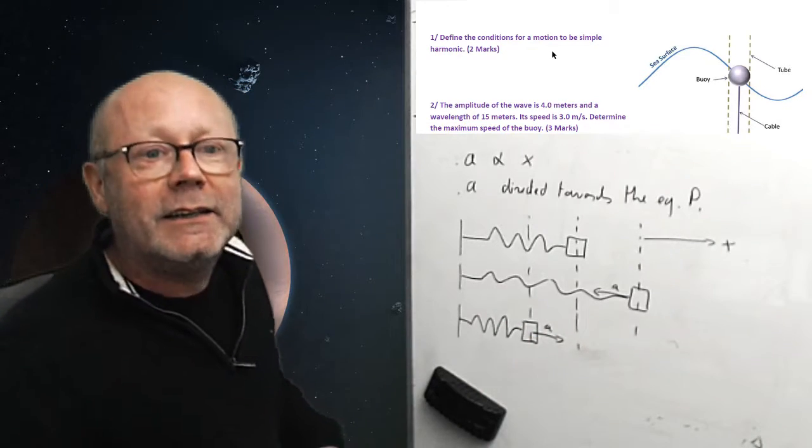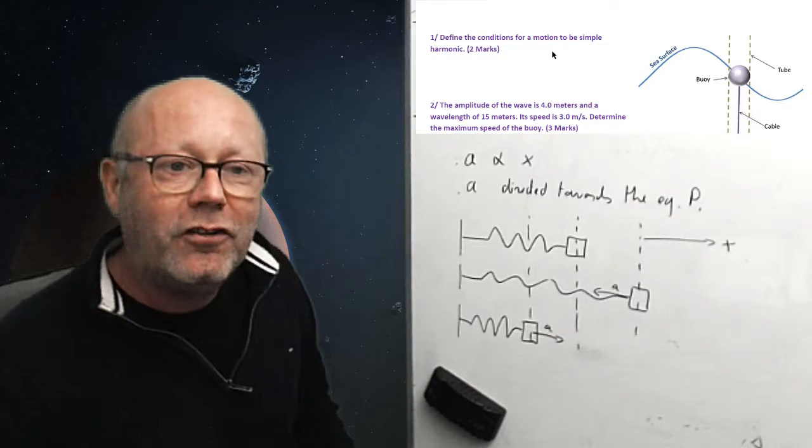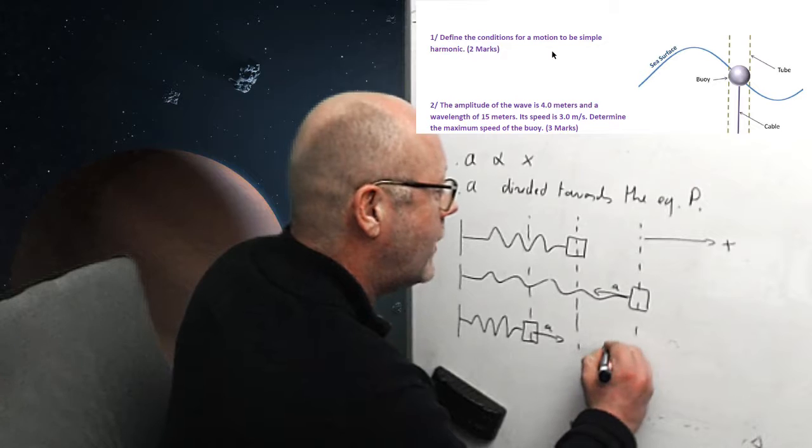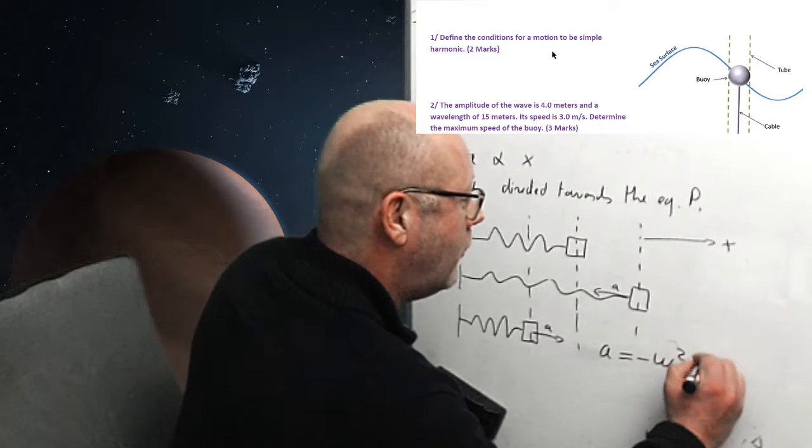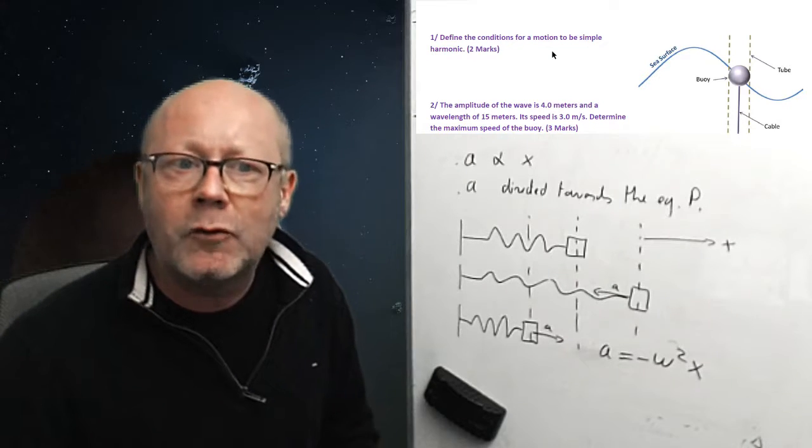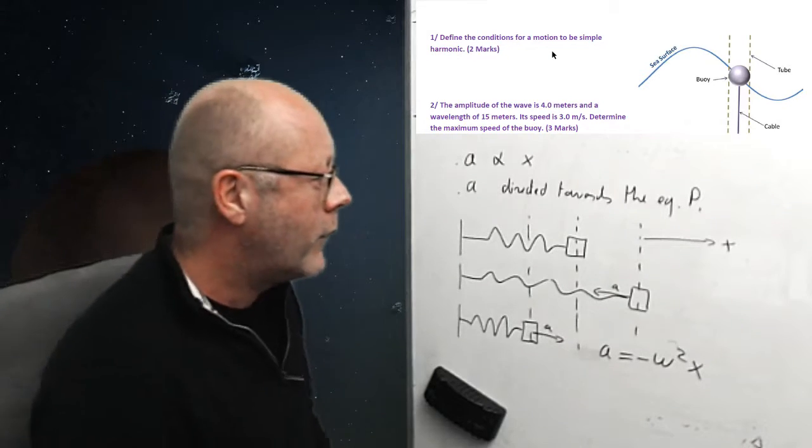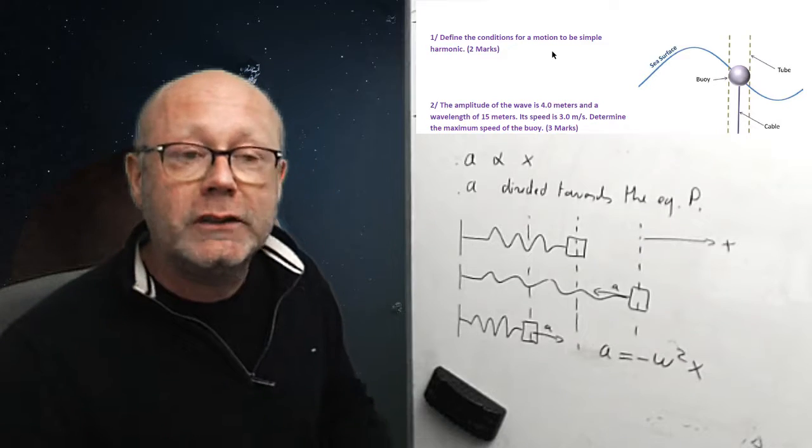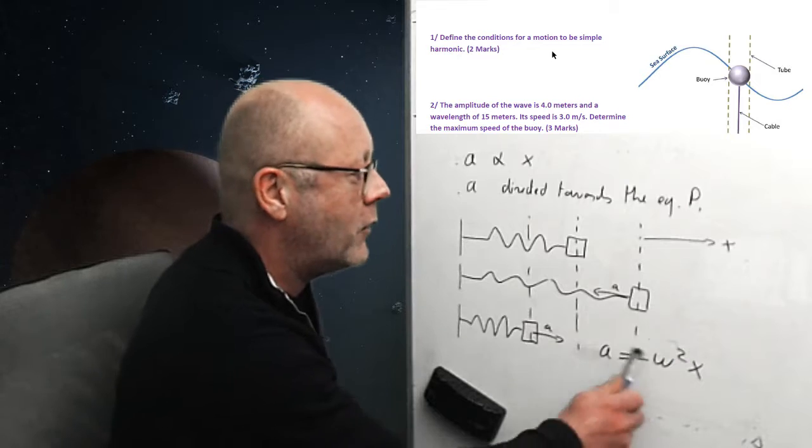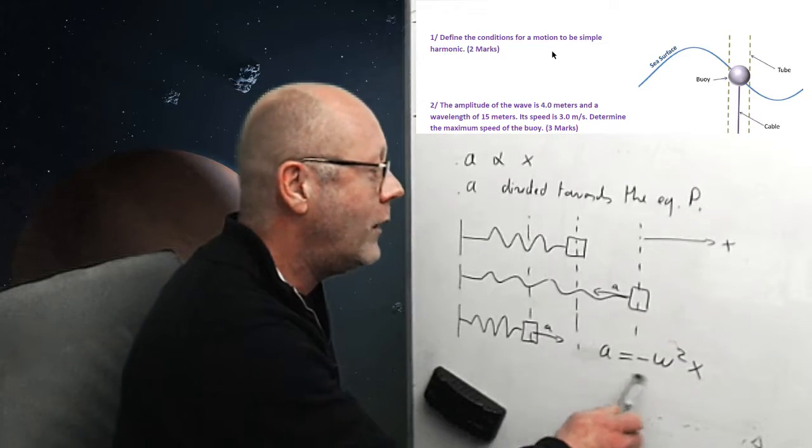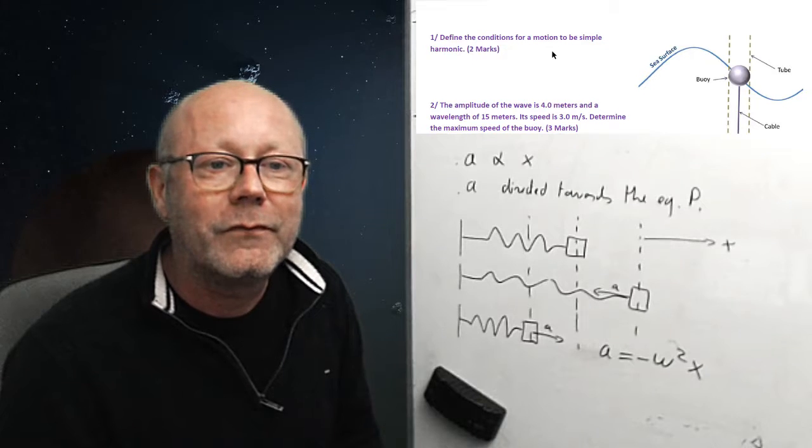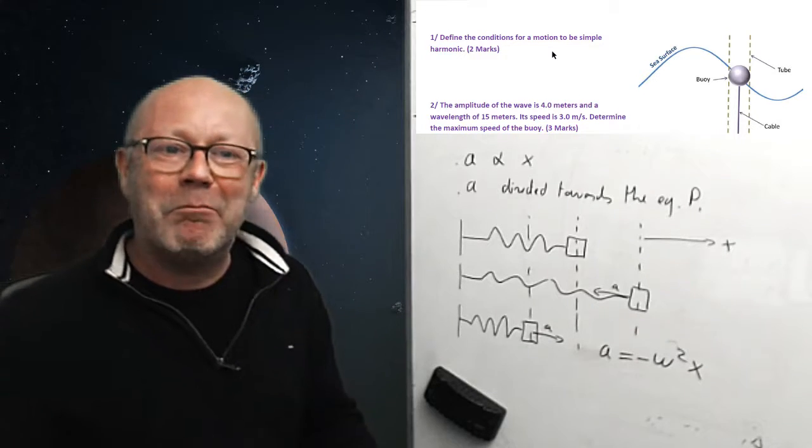This is expressed in the equation that represents simple harmonic motion, which is that the acceleration is equal to minus omega squared, the displacement, where omega is the angular velocity, or sometimes called pulsation. Omega in simple harmonic motion is a constant. So, you see that a is proportional to x, and because of the minus sign in front, a is always of opposite sign to x. No problem? Ok, next question.